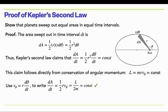Kepler came up with his second law before Newtonian physics was invented. His observation from the motion of Mars predates the concept of conservation of angular momentum. But we've just shown that those two things are mathematically the same.